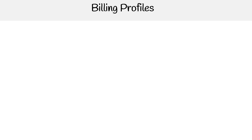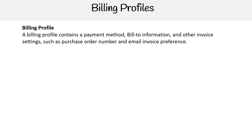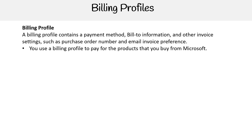Hey, this is Andrew Brown from ExamPro and we're taking a look at billing profiles in Microsoft 365. A billing profile contains a payment method, bill to information, and other invoice settings such as purchase order number and email invoice preference. You use a billing profile to pay for the products that you buy from Microsoft.